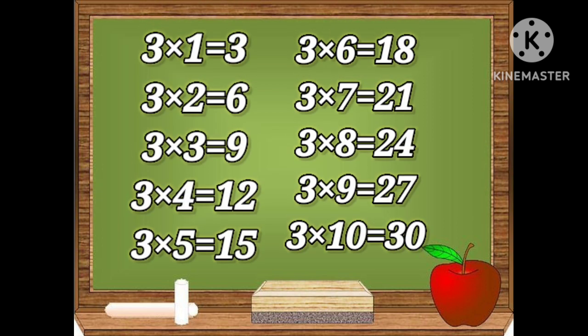Let's repeat the table. Three ones are three, three twos are six, three threes are nine, three fours are twelve, three fives are fifteen, three sixes are eighteen, three sevens are twenty-one, three eights are twenty-four, three nines are twenty-seven, three tens are thirty.